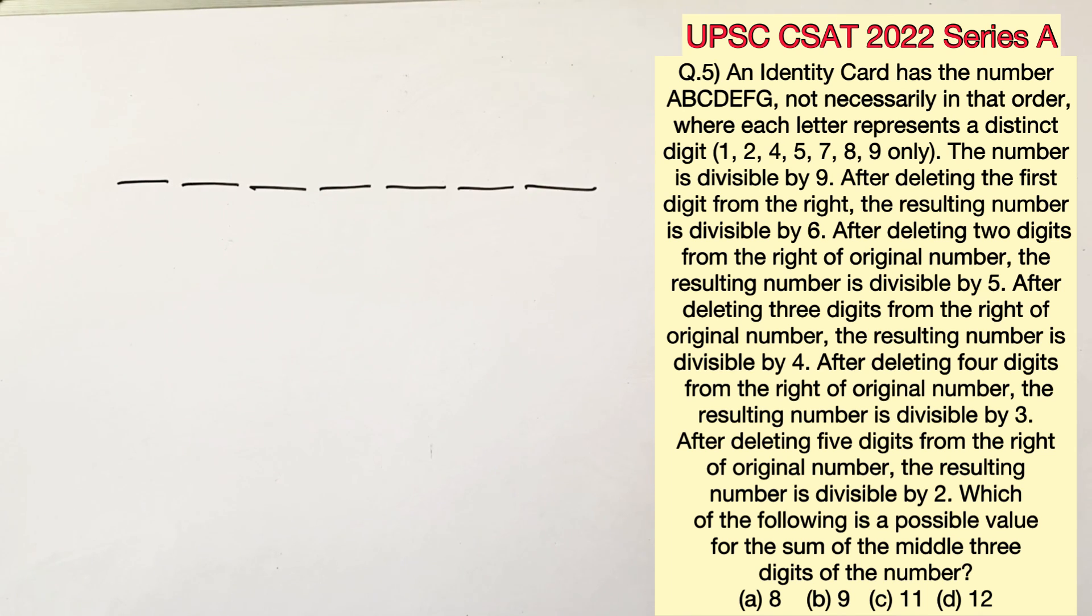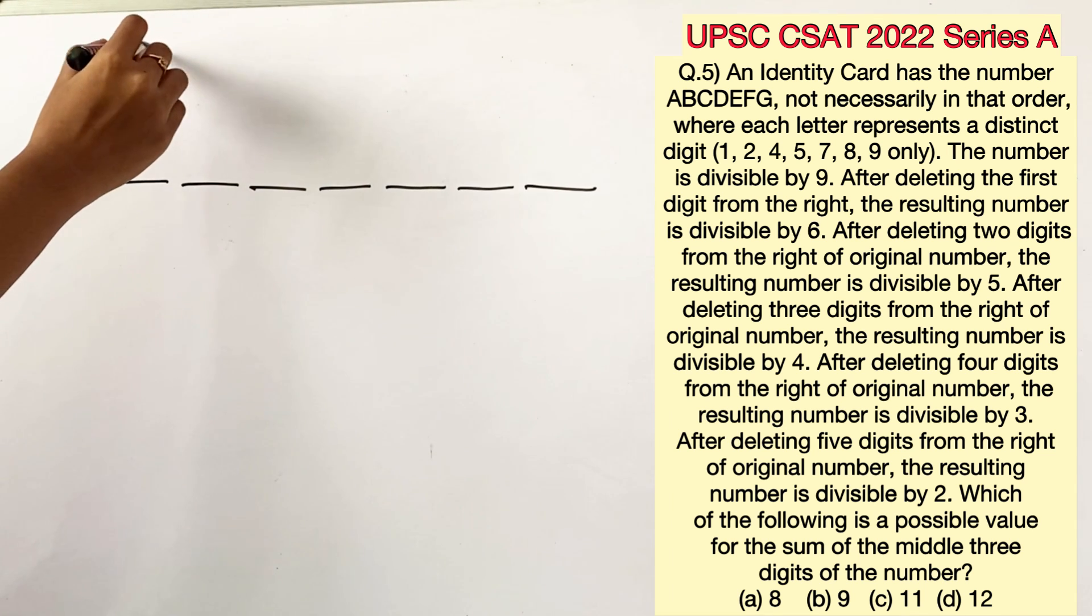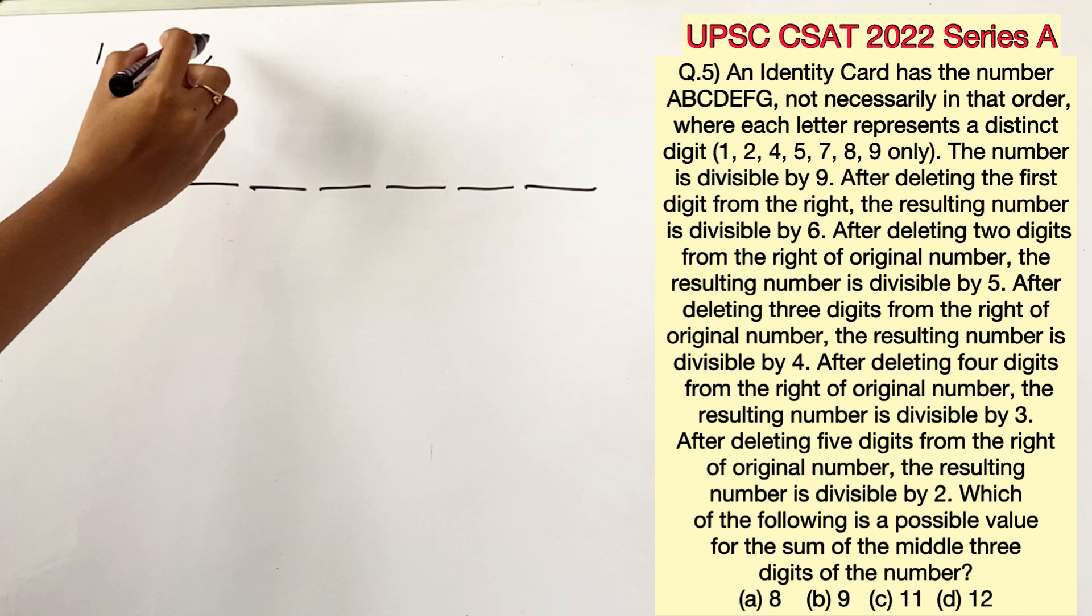From the question we can see that there is no repetition of digits and in total there are 7 digits. By reading the question you'll be able to find out that there is no need to take the ABCDEFG into account because it is not going to help us anywhere.